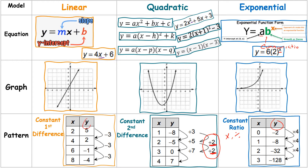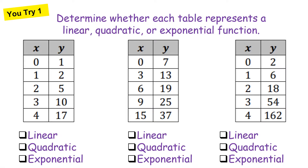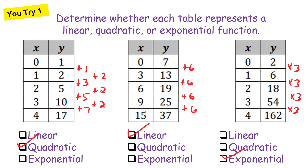Now take a look at these three tables and determine whether each represents a linear, quadratic, or exponential function — go ahead and pause the video to try on your own. The first table is quadratic because the second difference is constant (adding 2). The second is linear because you're adding 6 each time. The third is exponential because you're multiplying by the same number.